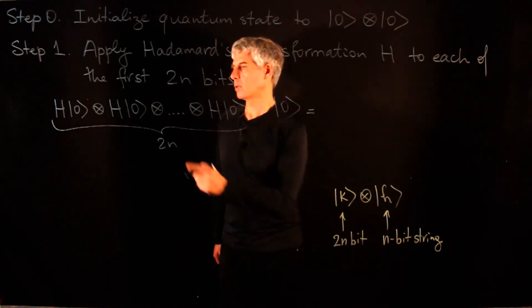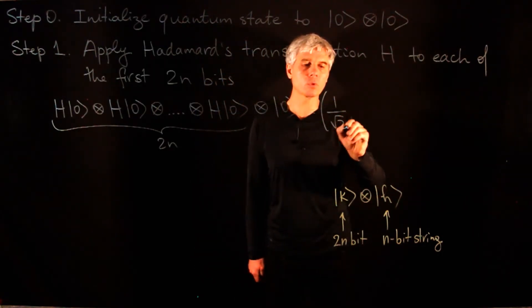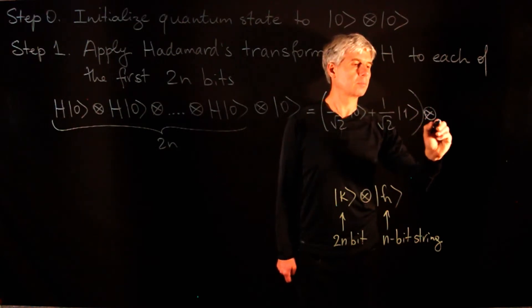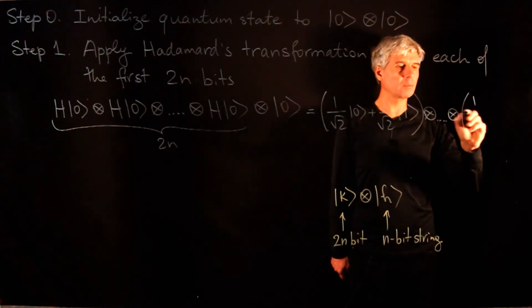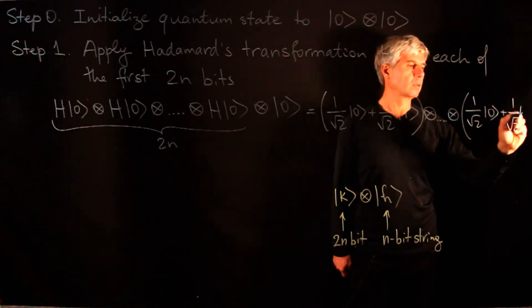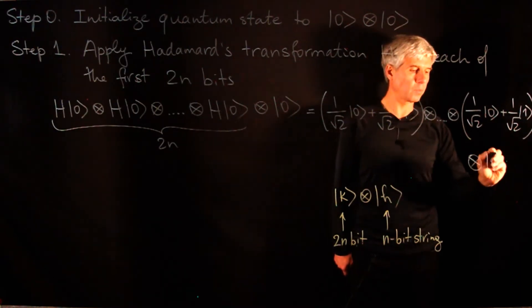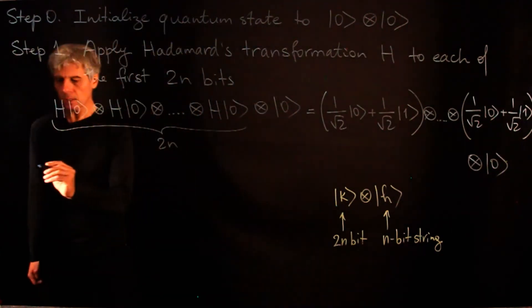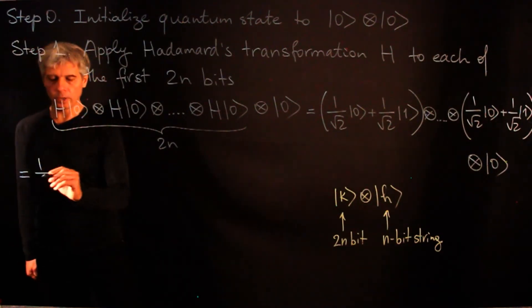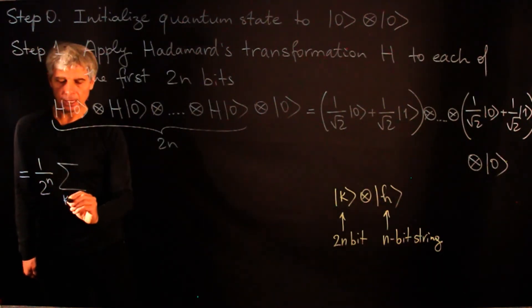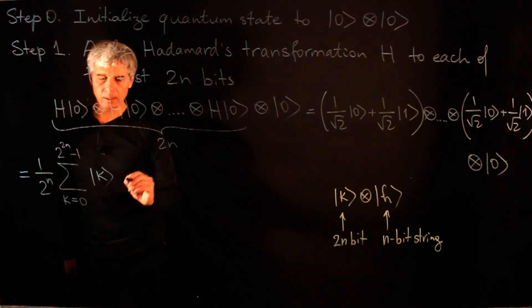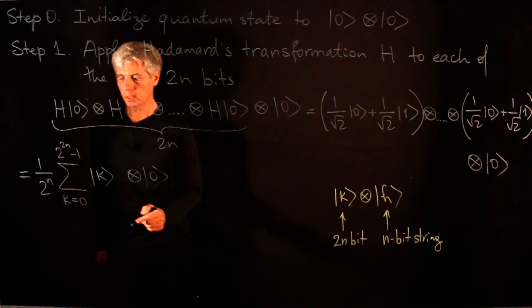Expanding this for all 2n bits, we get (1/2^n) times the sum over k from 0 to 2^(2n)−1 of |k⟩, all tensored with |0⟩. Here we get all possible binary strings of length 2n with equal coefficients, and we interpret our first 2n bits as input while the output bits are zero.